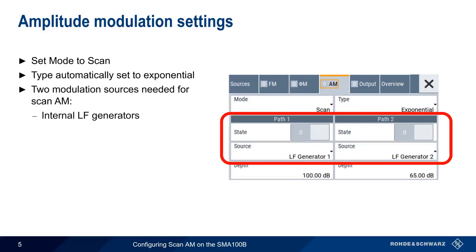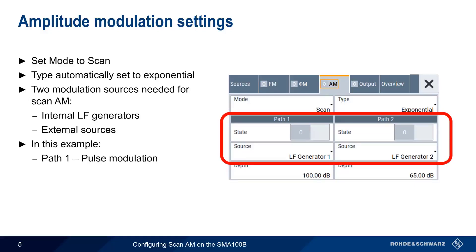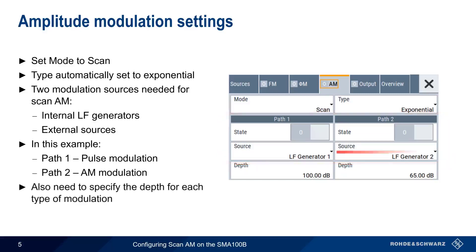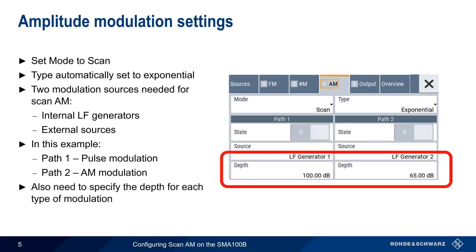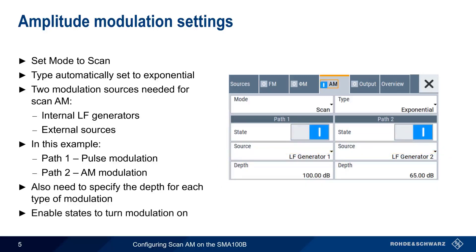These paths can be the SMA's internal low-frequency generators or external sources. In this example, we'll be using the SMA's two internal LF generators to configure pulse modulation on path 1 and AM modulation on path 2. For both of these paths, we'll also need to specify the modulation depth — that is, the distance between maximum and minimum power — and finally, we'll need to enable each state to turn on modulation.